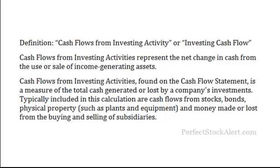As we do in each one of these fundamental analysis tutorial videos, I'll give you the actual definition and then we'll go on to look at some examples and give you more insight. Cash flows from investing activities represent the net change in cash from the use or sale of income generating assets. Cash flow from investing activities, found on the cash flow statement, is a measure of the total cash generated or lost by a company's investments. Typically included in this calculation are cash flows from stocks, bonds, physical property, and money made or lost from the buying and selling of subsidiaries.